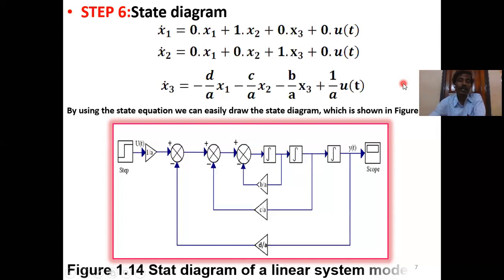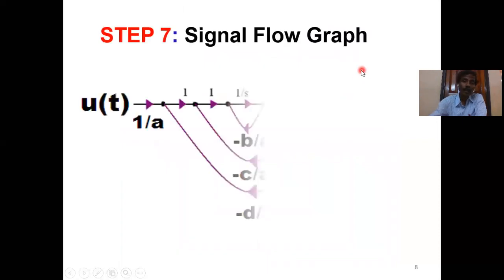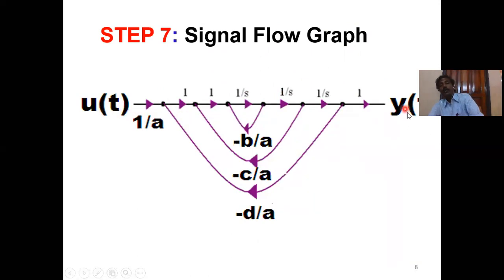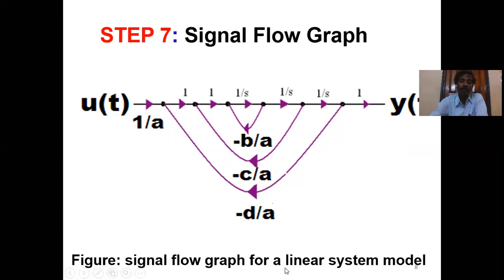For the signal flow graph: there are three nodes acting as adders and three integration branches each with gain 1/s. The first feedback path has gain −B/A, the second feedback path −C/A, and the third feedback path −D/A. The input U(t) enters with gain 1/A and the final output is Y(t). This is the signal flow graph or linear system model.